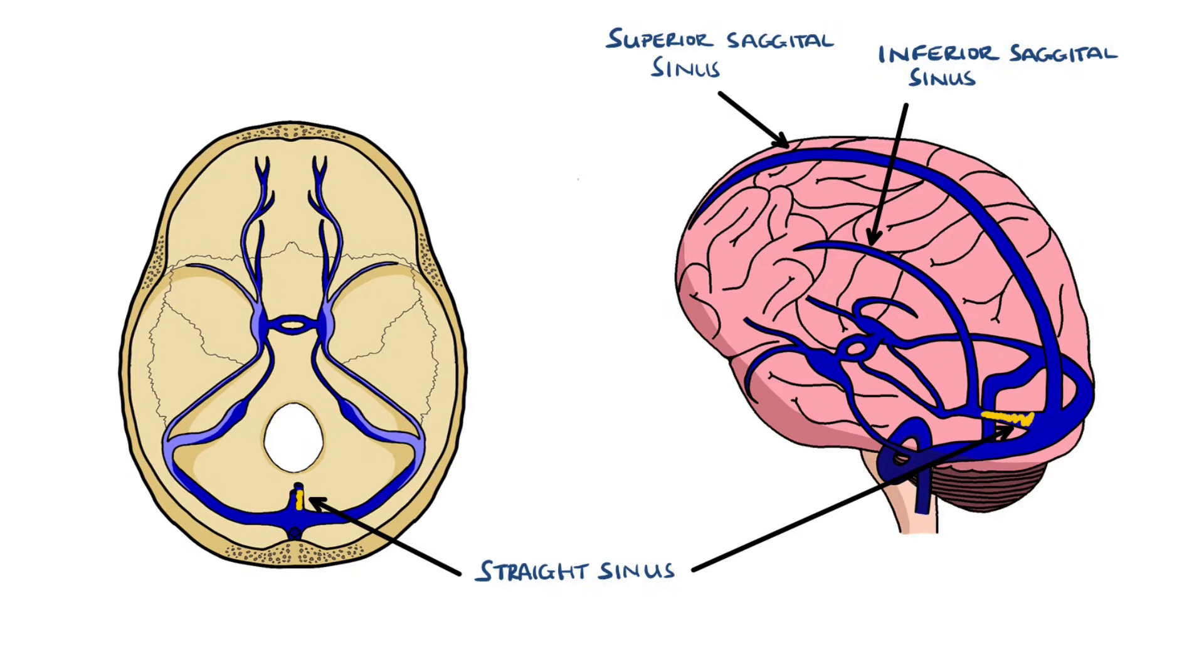The straight sinus and superior sagittal sinus join at the confluence of sinuses, found at the internal occipital protuberance. This confluence of sinuses also has the occipital sinus draining into it.